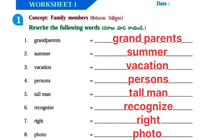Worksheet No. 1 — Rewrite the following words. Here some words are given. You have to write as they are: Grandparents,